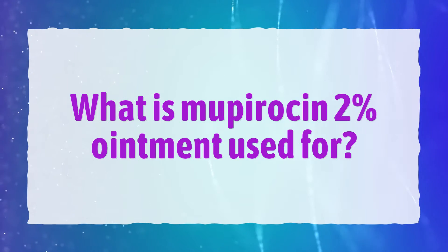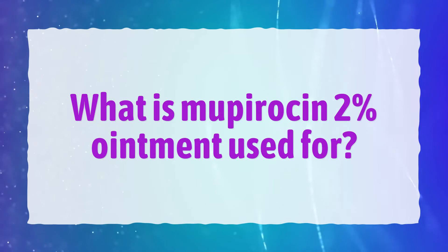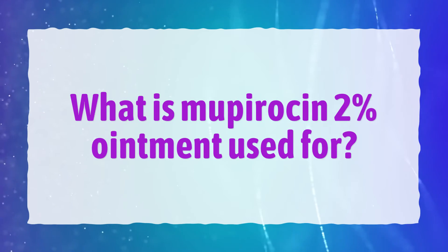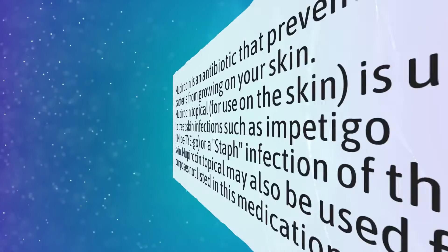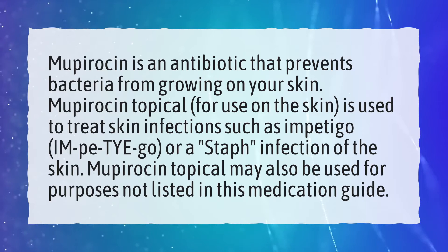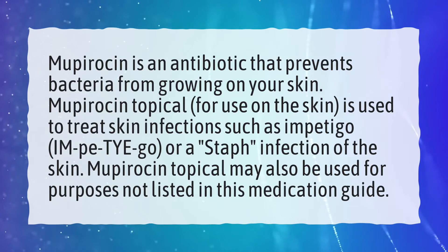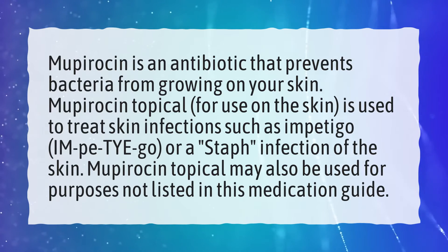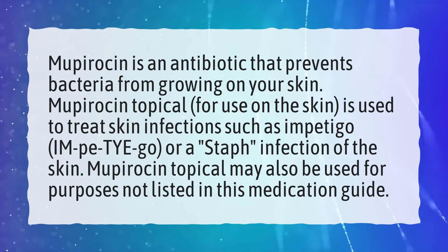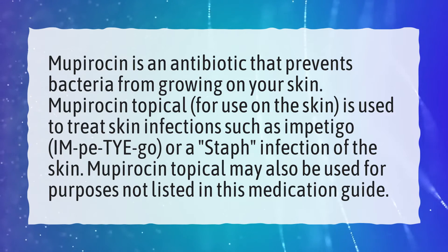What is Mupirocin 2% ointment used for? Mupirocin is an antibiotic that prevents bacteria from growing on your skin.